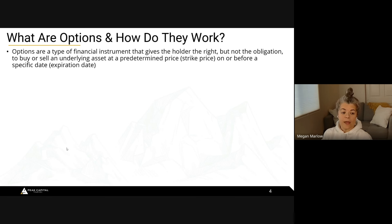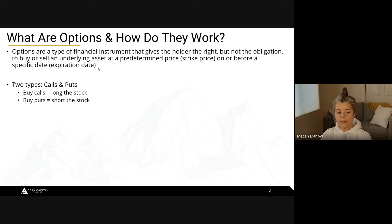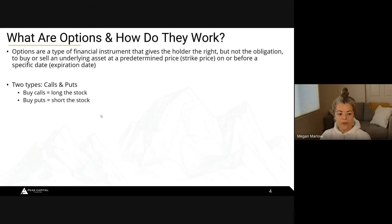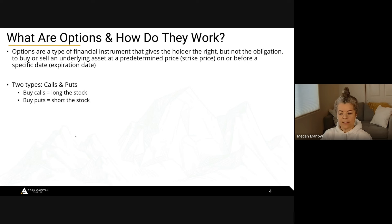With intraday positions, we're getting into contracts and out of contracts — exchanging the contracts back and forth rather than the shares. There are two types of option contracts: calls and puts. If you buy calls, you're technically long the stock. If you think Apple is going up, you buy calls. If you buy puts, you're technically short the stock — if you think Tesla is going down, you buy puts on Tesla.